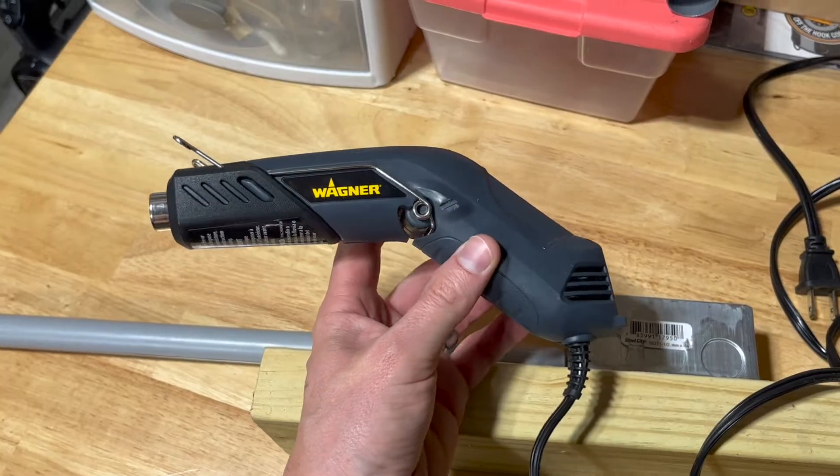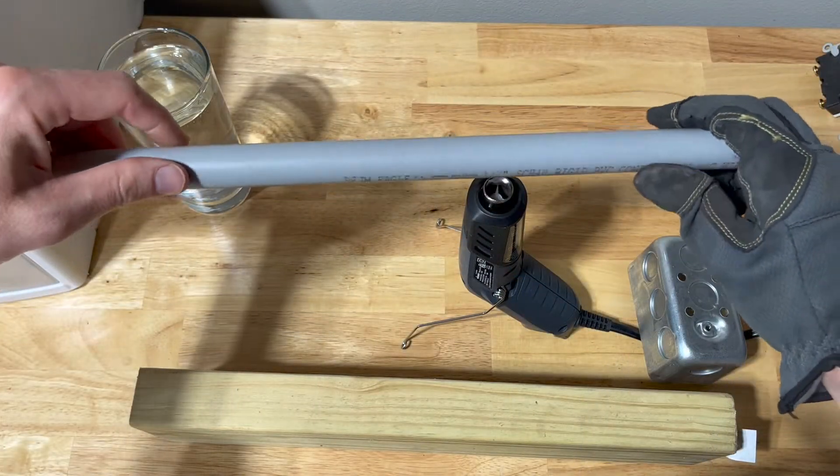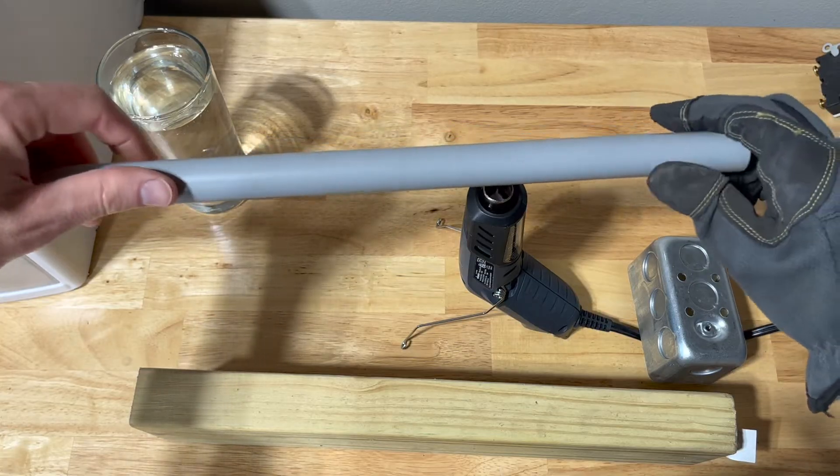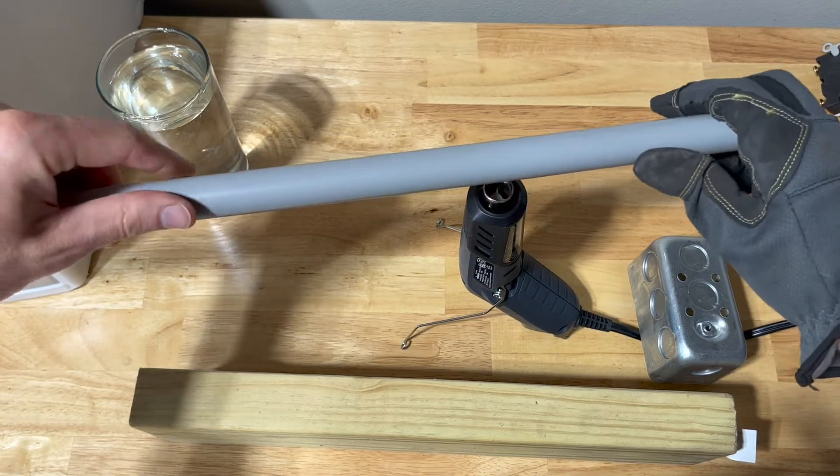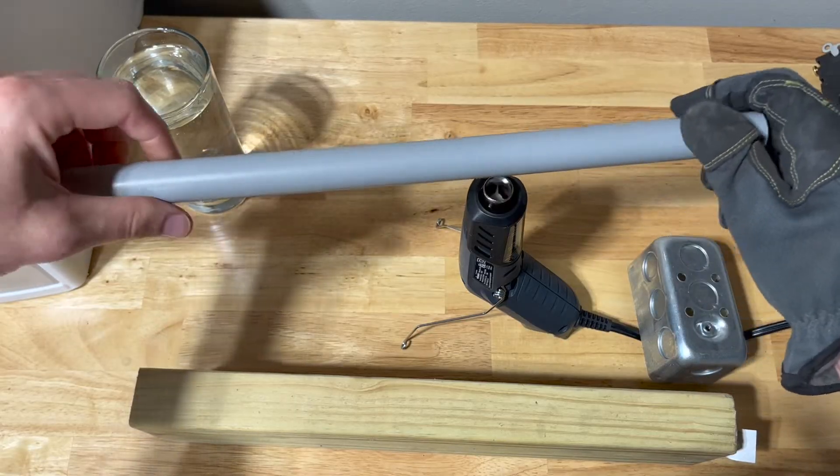You're going to need a heat gun. I like this one, it's made by Wagner. You just want to turn it as you heat it because if you heat it in one spot for too long, it'll actually burn the PVC, and you just want to test and you'll know when it's soft enough to bend.